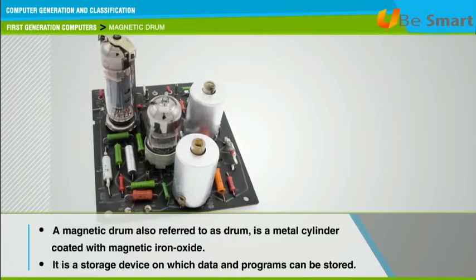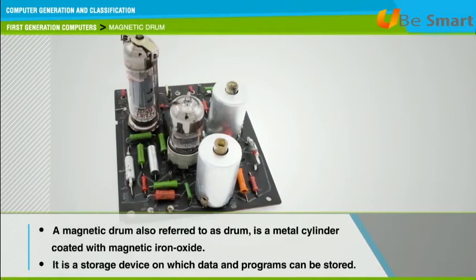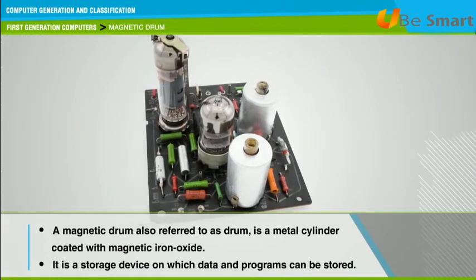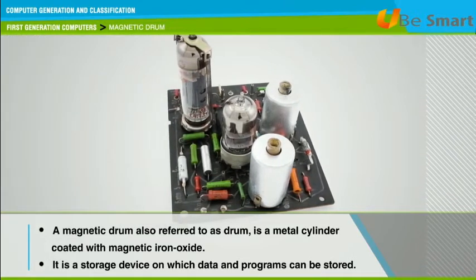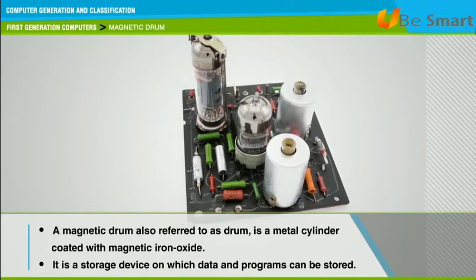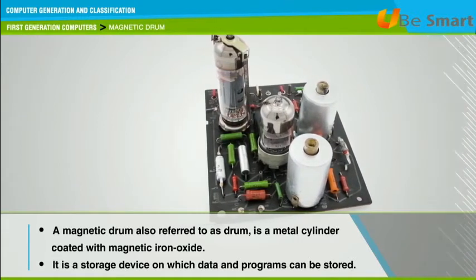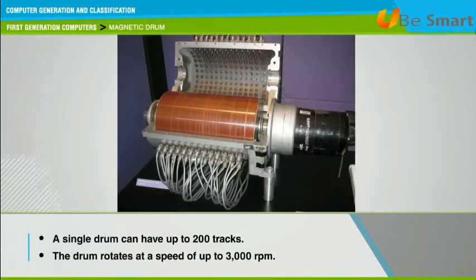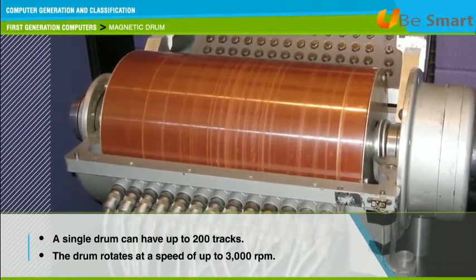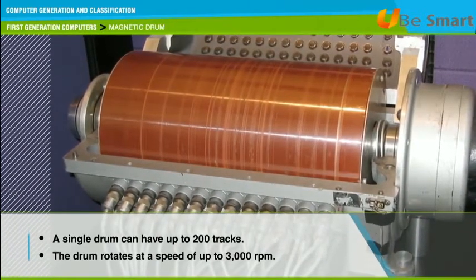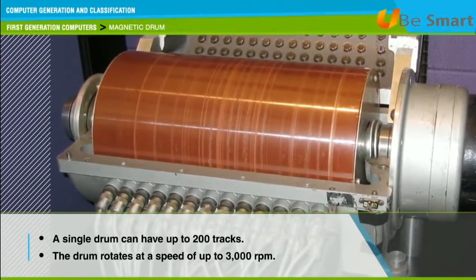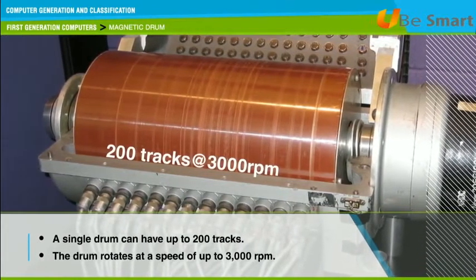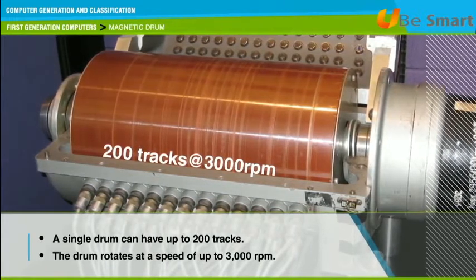Let us look at how the magnetic drum worked. The drum is a metal cylinder coated with magnetic iron oxide, which acts as a storage device on which data and programs can be stored. Magnetic drums were once used as a primary storage device but now are used as supplementary storage devices. The tracks on a magnetic drum are assigned to channels located around the circumference of the drum, forming adjacent circular bands. A single drum can have up to 200 tracks and rotates at a speed of up to 3000 rpm.